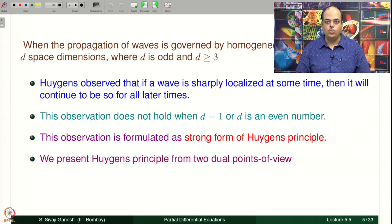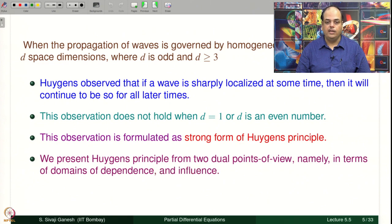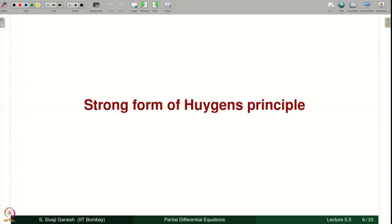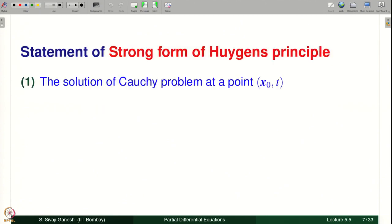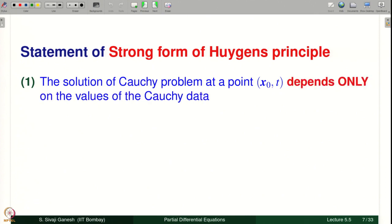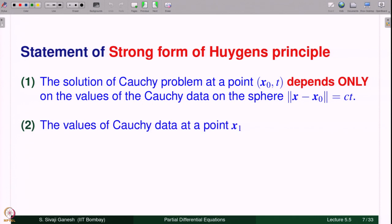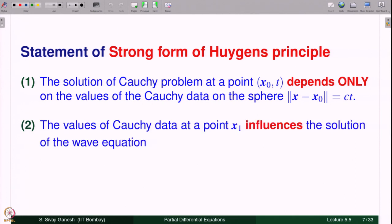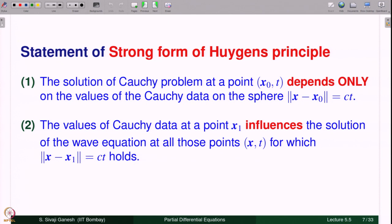We present Huygens' principle from two dual points of view, namely in terms of domains of dependence and influence. Strong form of Huygens' principle, statement 1: the solution of the Cauchy problem at a point x₀, t depends only on the values of the Cauchy data on the sphere ‖x − x₀‖ = ct.